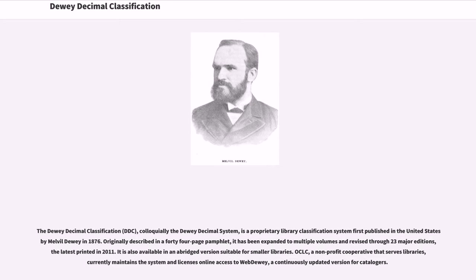Originally described in a 44-page pamphlet, it has been expanded to multiple volumes and revised through 23 major editions, the latest printed in 2011. It is also available in an abridged version suitable for smaller libraries. OCLC, a non-profit cooperative that serves libraries, currently maintains the system and licenses online access to WebDewey, a continuously updated version for catalogers.